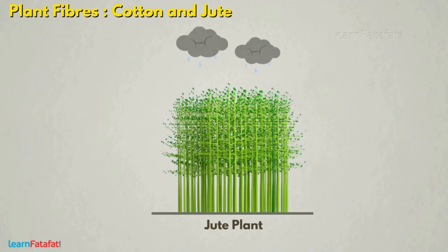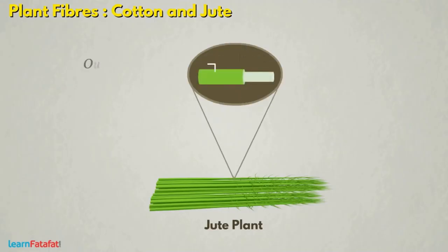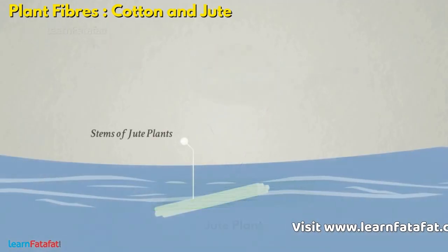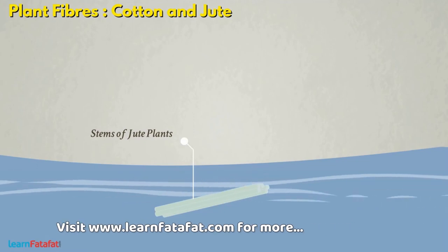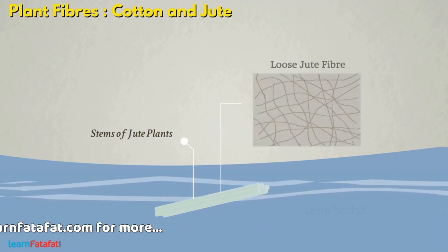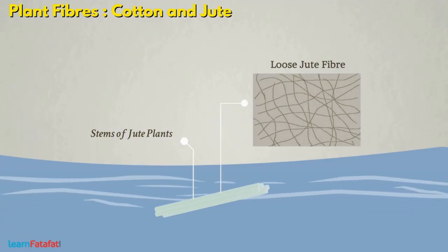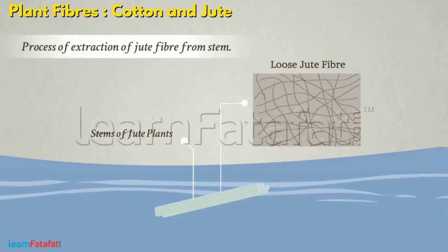It is cultivated in the rainy season. The jute plants are harvested at the flowering stage. Jute fibers are obtained from the outer skin of jute plants, called the ribbon, and also from the stem. Jute plants are bundled and kept in soft running water for a few days, during which the fibers become loose from the stem and can be easily separated. This process of extraction of jute fiber from the stem is called retting.